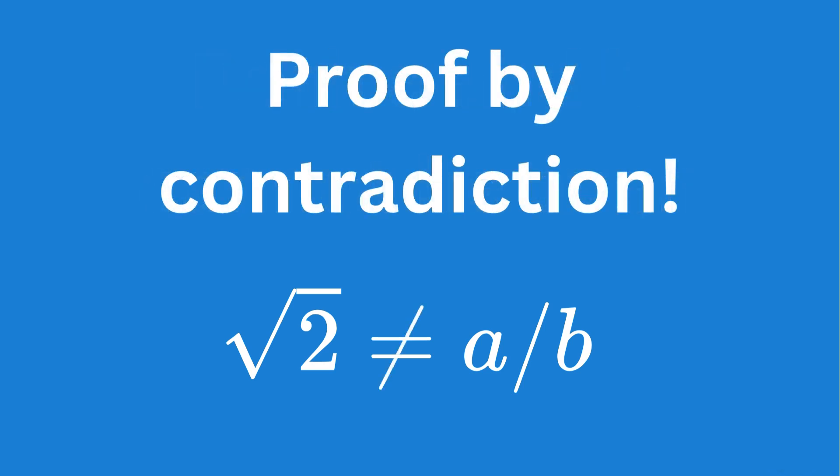It then follows that our assumption that the square root of 2 was rational was false, and the square root of 2 must be irrational.